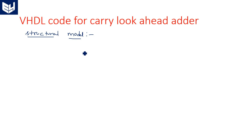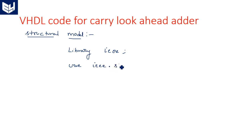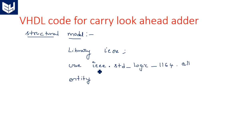Start any VHDL code with the library declaration: 'library IEEE'. All packages related to this VHDL code are invoked from this IEEE library: 'use IEEE.STD_LOGIC_1164.all'. There are two parts in VHDL code — the entity part, where we declare inputs and outputs, and the architecture, where we write the code.